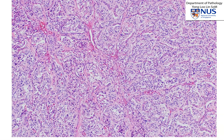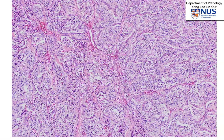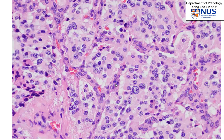Microscopically, these tumors classically have a zellballen kind of arrangement, which essentially just means nests of cells. You can see a very nested arrangement. The reason why it's nested is because there is a very delicate blood vessel or vascular network that runs in between the nests. If we look at individual tumor cells, we can see that they are quite polygonal in shape. They are fairly uniform, and the nuclei are quite round. Many of the nuclei have a kind of granular chromatin, and they have small nuclei.